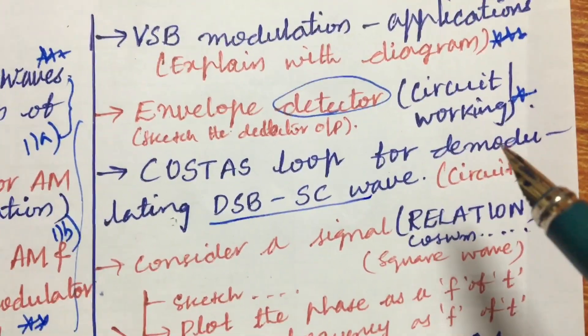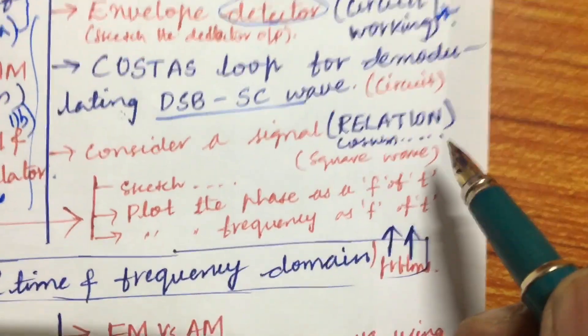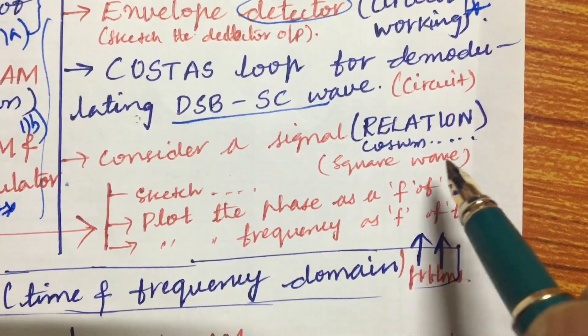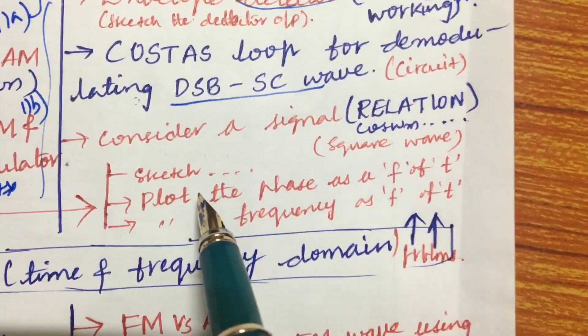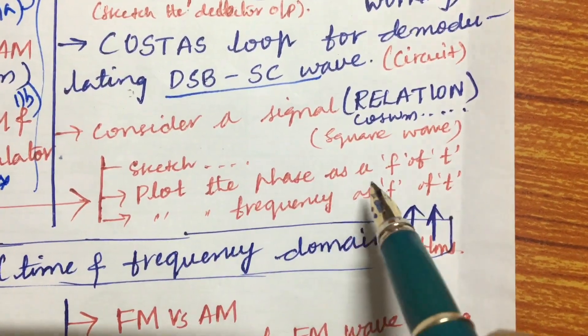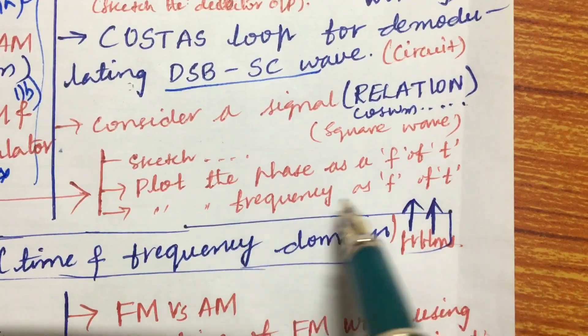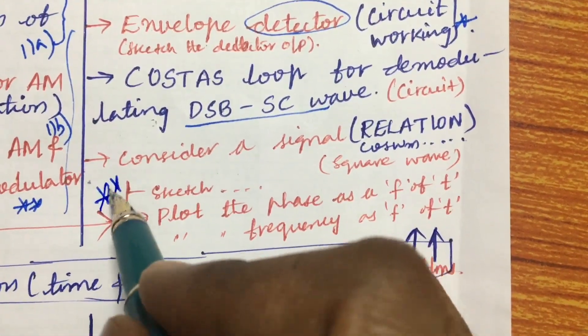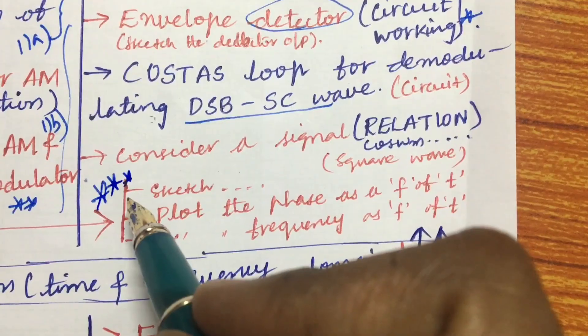Related to this also you are going to get one question. Consider a signal relation, certain relation will be given for a square wave where we are supposed to sketch it as well as plot the phase as a function of T and plot the frequency as a function of T. This may be one of the very very important, if this comes this is the direct 15 mark question.